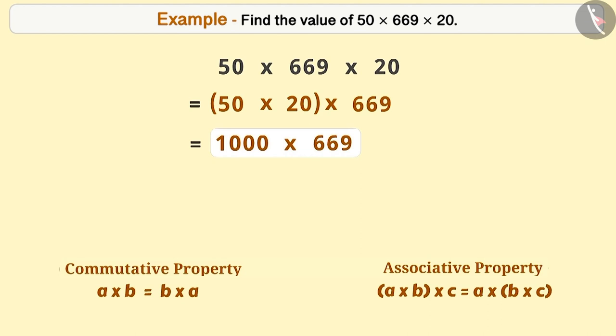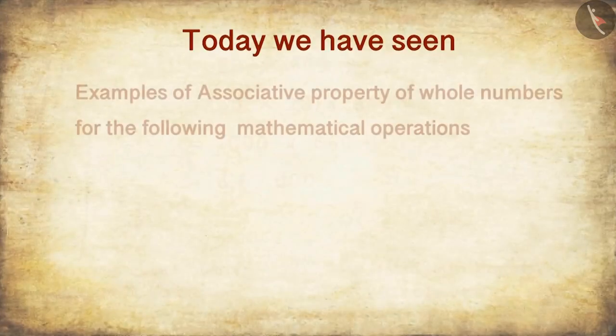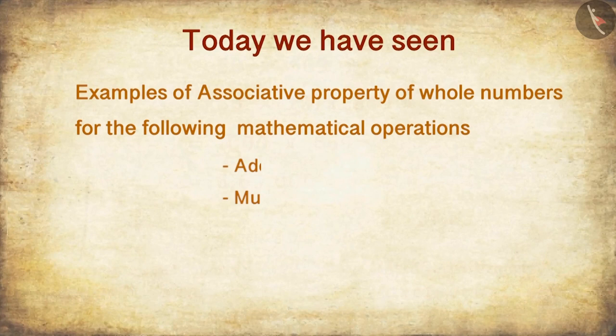the product of 1000 and 669 can be easily obtained to be 669,000. Today, we have seen examples of associative property of whole numbers for the following mathematical operations.